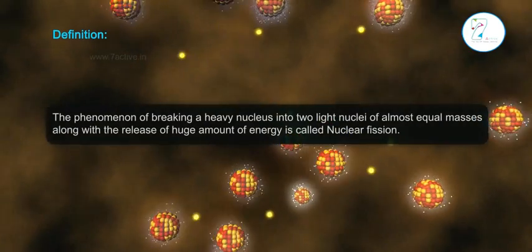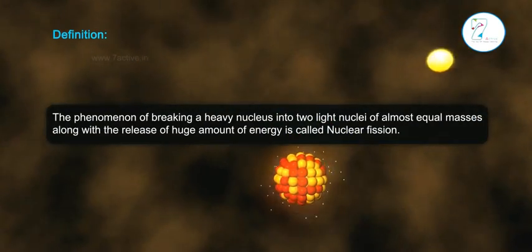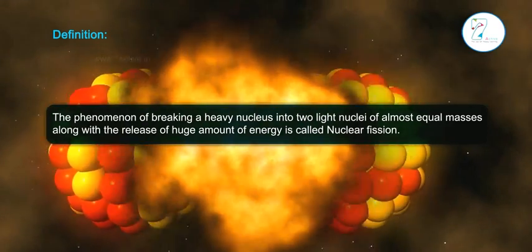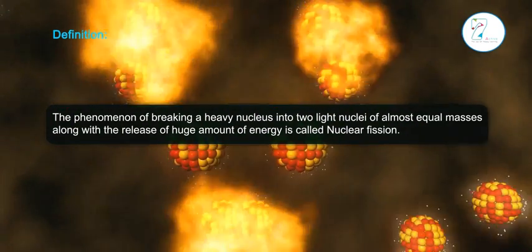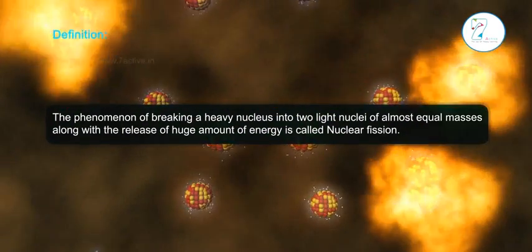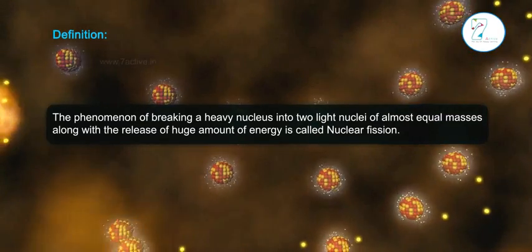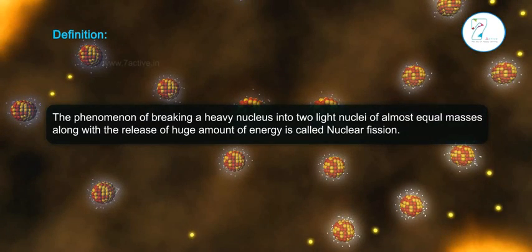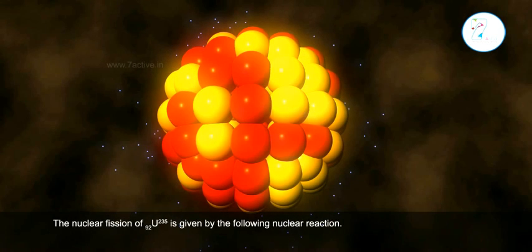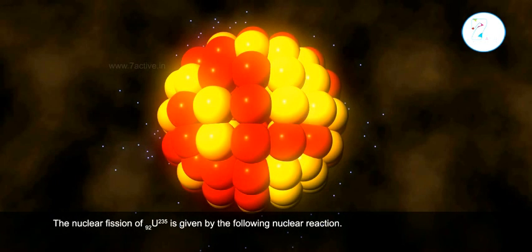Definition: The phenomenon of breaking a heavy nucleus into two light nuclei of almost equal masses along with the release of a huge amount of energy is called nuclear fission. The nuclear fission of 92U235 is given by the following nuclear reaction.